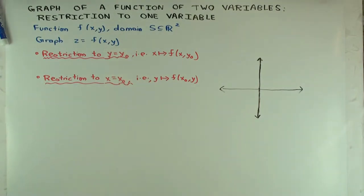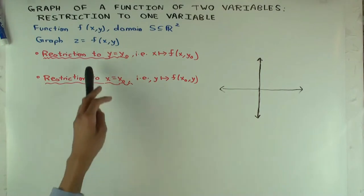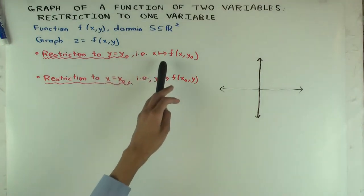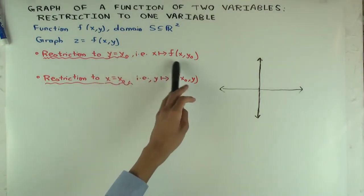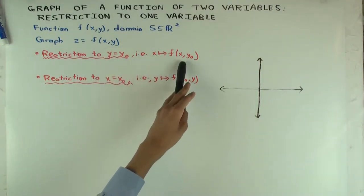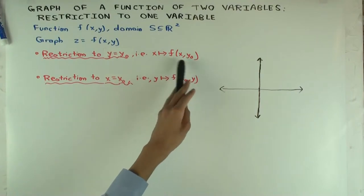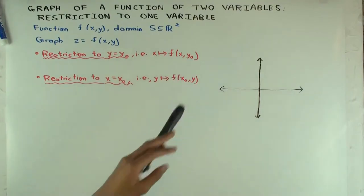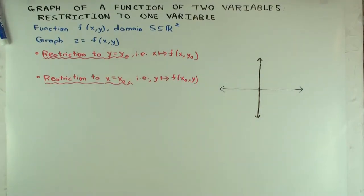So after you do the restriction, how many variables is it a function of? It becomes a function of one variable, because this other variable is fixed.